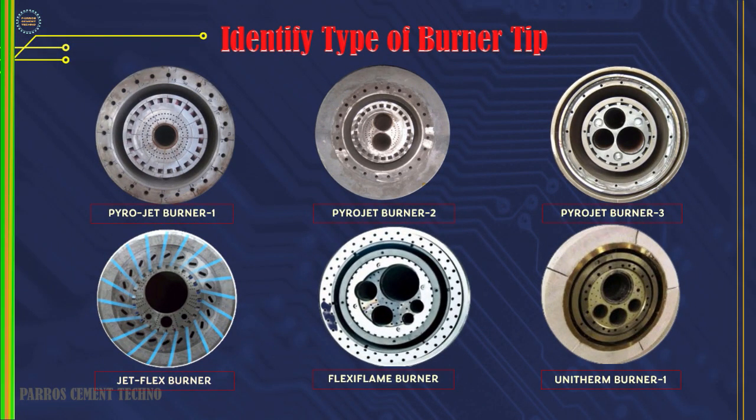The Pyrojet burner — there's the Pyrojet 1, Pyrojet 2, and Pyrojet 3 — next to the JetFlex burner, FlexiFlame burner, and the Unitherm burner. This type of burner is usually for primary air using a roots blower, which has a higher pressure than using a primary fan. Pay close attention and learn how to operate the type of burner which we will use for the operation of the kiln. Each type of burner has different characteristics and operating methods.